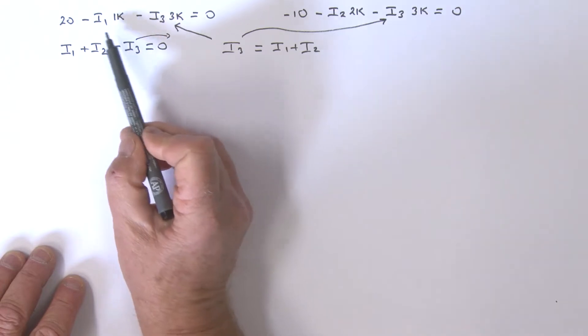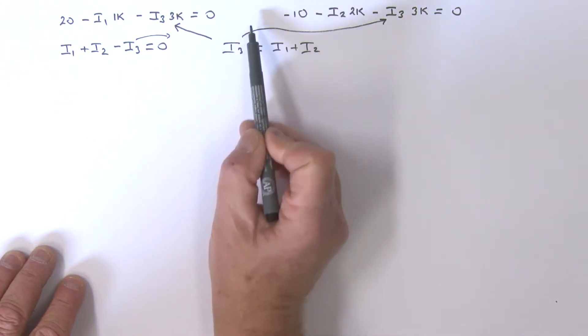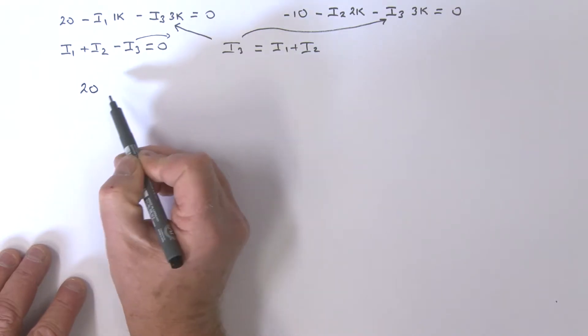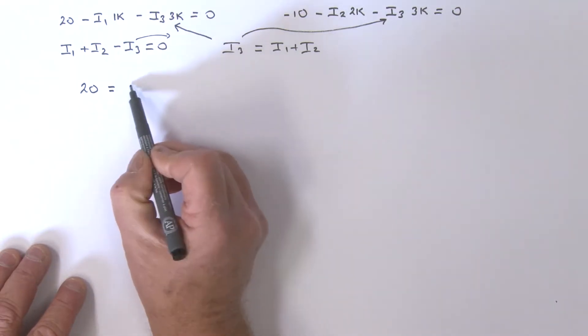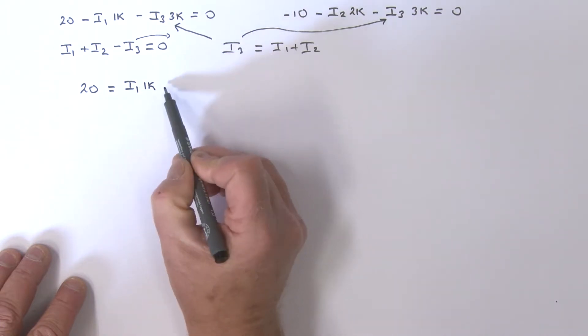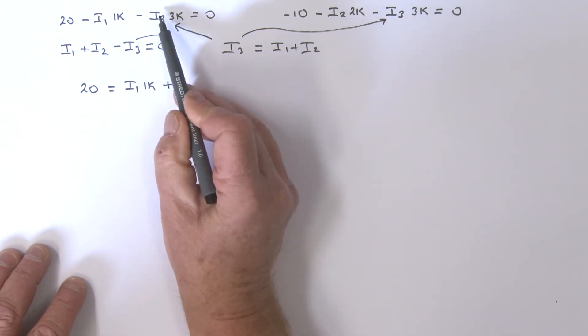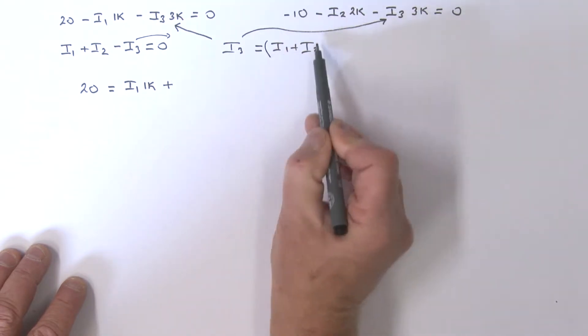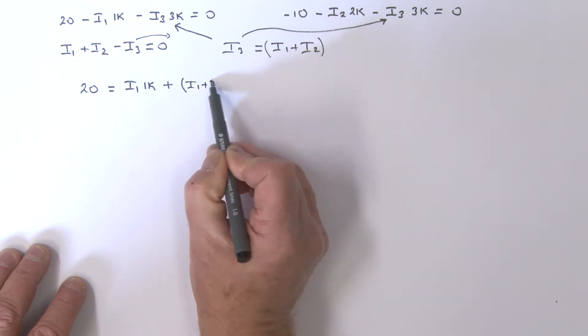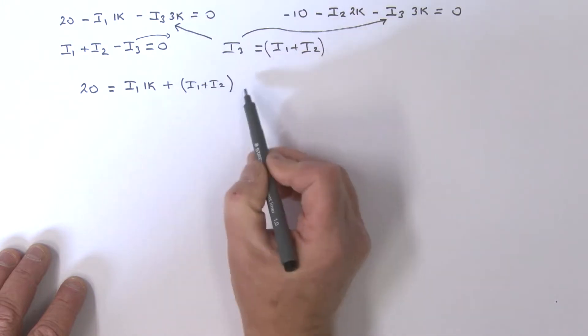What I'll do is take these two terms to the other side. So I have 20 equals i1 times 1k. This has gone to the other side, so that's a plus i3. But i3 equals i1 plus i2, so let's put a bracket there. That's i1 plus i2, times 3k.